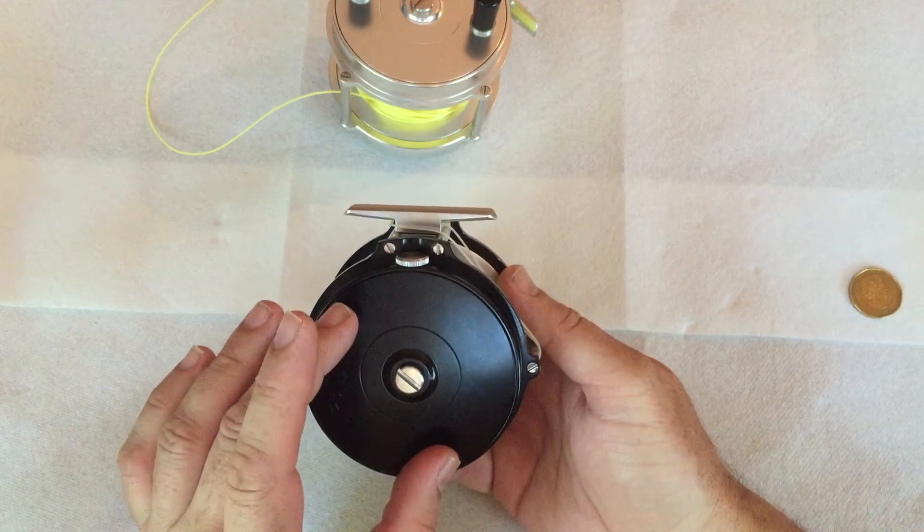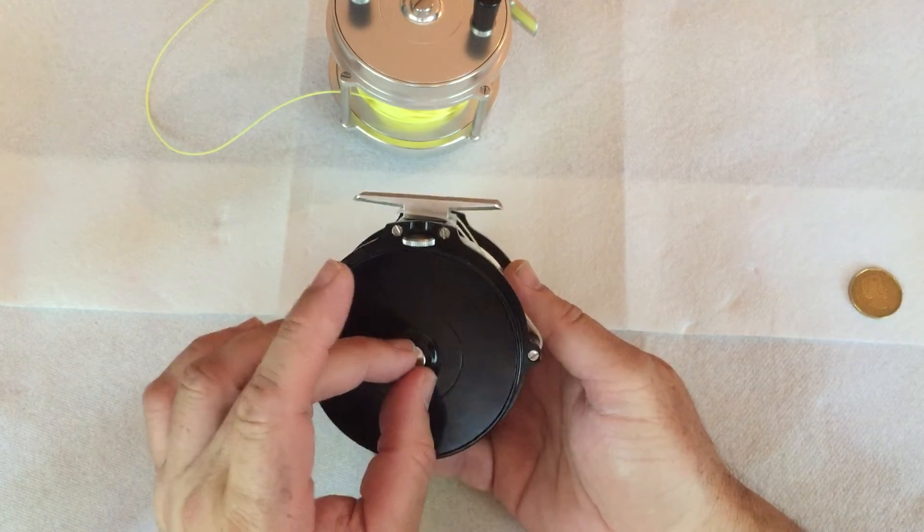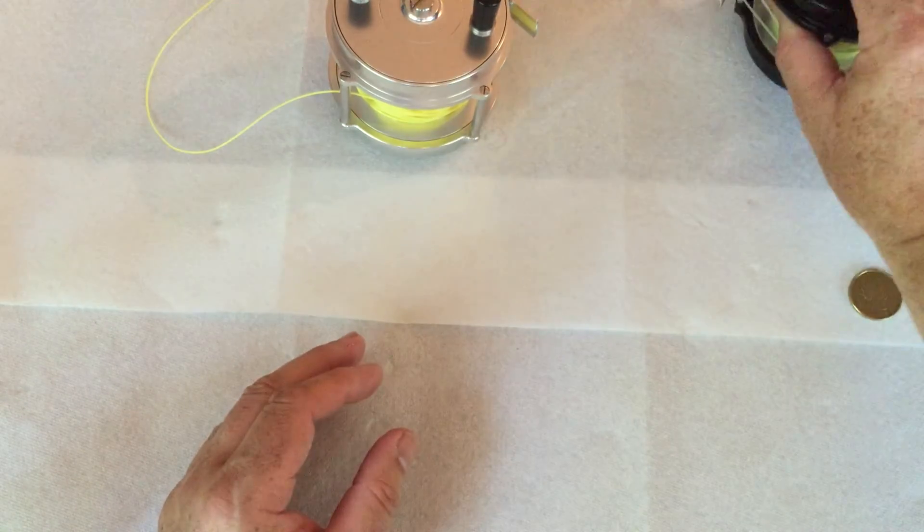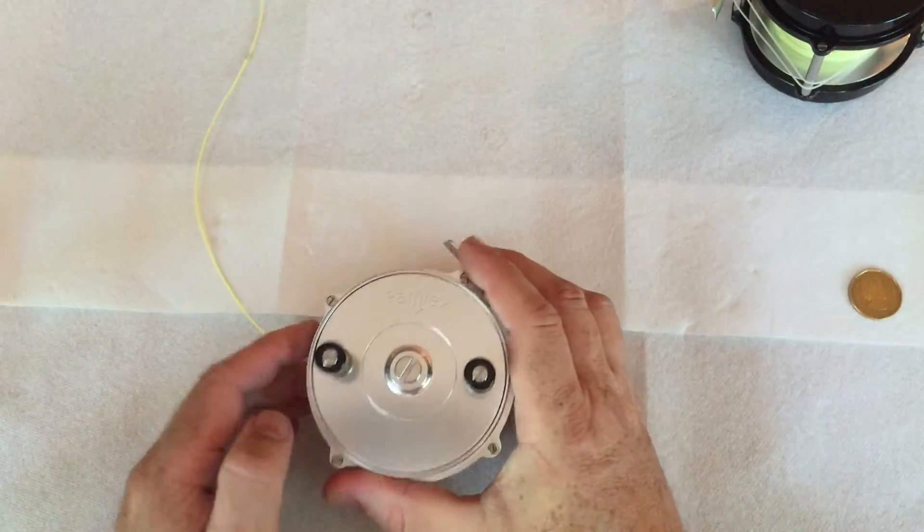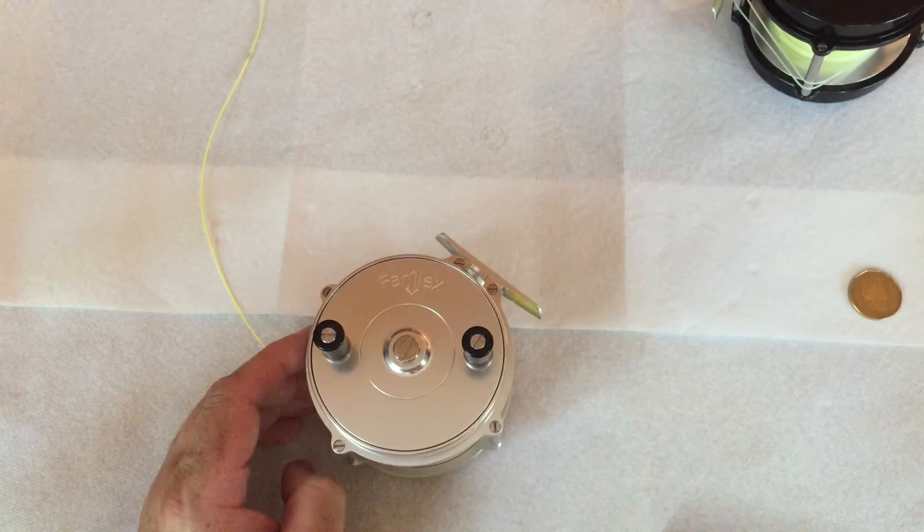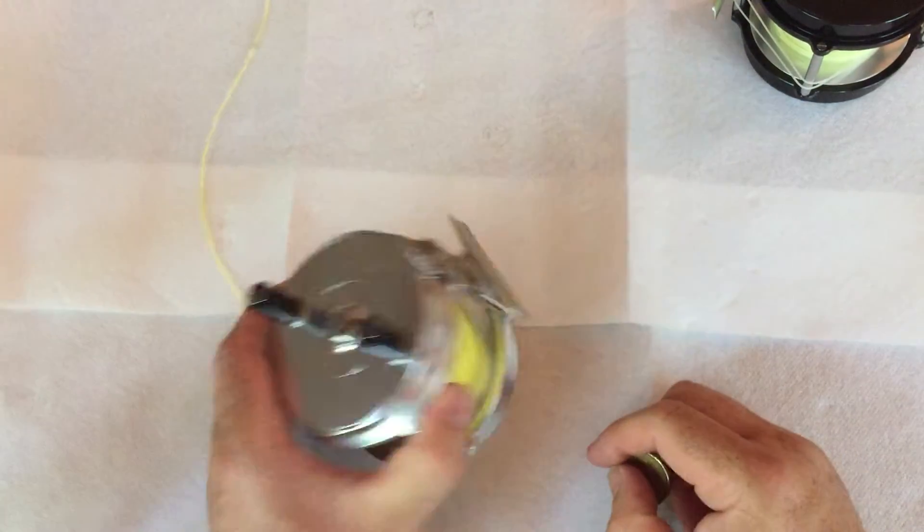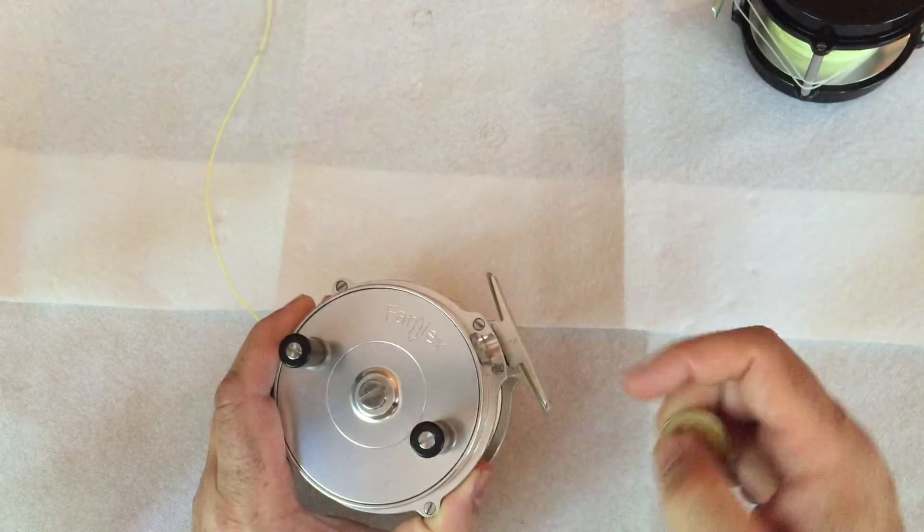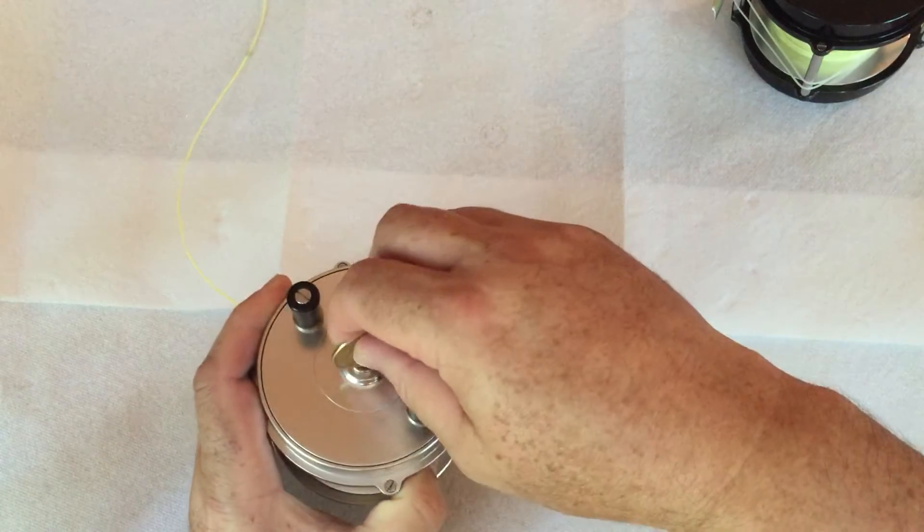So in the case of this S handle, the back plate would come off. The reel I'm going to show you how to lubricate, just because it'll show up better on video, is this left-hand dual handled plate wind I have.